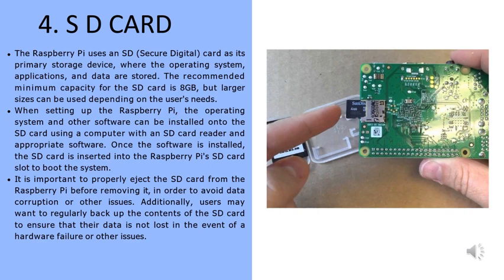Once the software is installed, the SD card is inserted into the Raspberry Pi's SD card slot to boot the system. It is important to properly eject the SD card from the Raspberry Pi before removing it in order to avoid data corruption or other issues. Additionally, users may want to regularly back up the contents of the SD card to ensure that their data is not lost in the event of hardware failure.